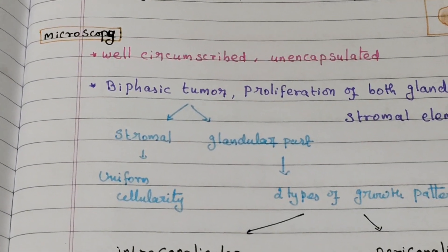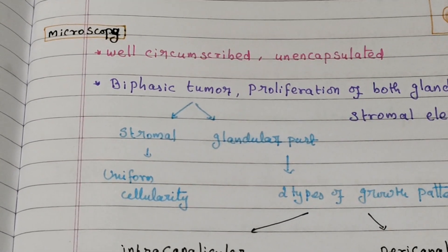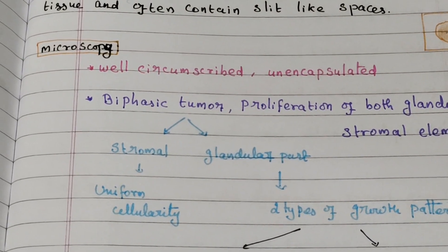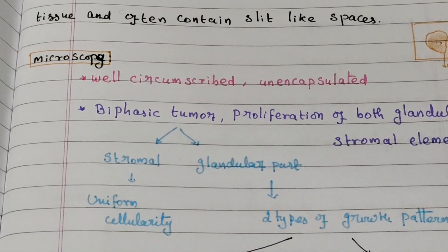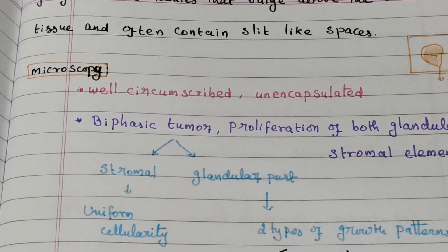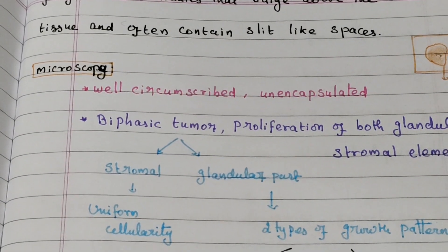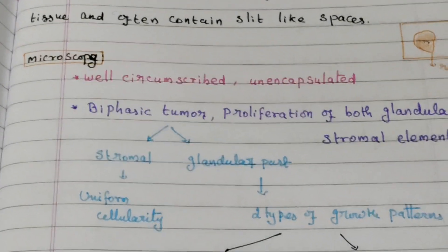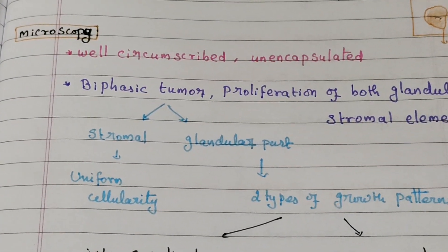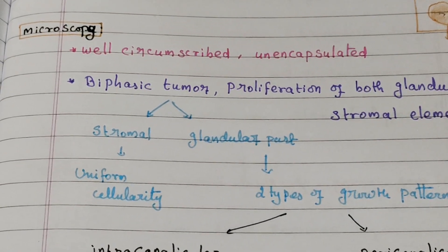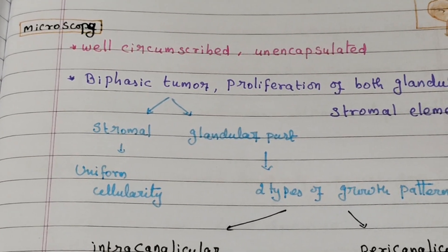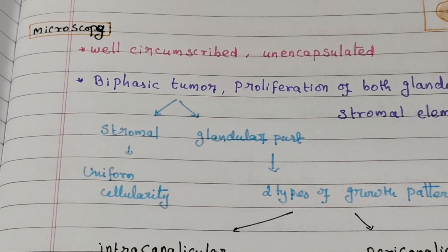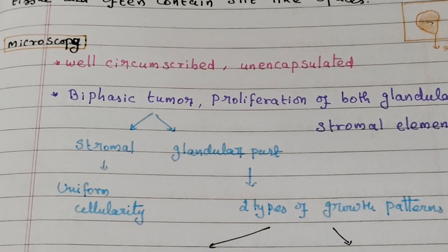Now going to the microscope. Under microscopy it is a well-circumscribed tumor; it is not encapsulated but is very well circumscribed. As already mentioned, it is a biphasic tumor, meaning there are two parts: a glandular part and a stromal part. The stromal part shows almost uniform cellularity in a normal fibroadenoma. Now what about the glandular part?